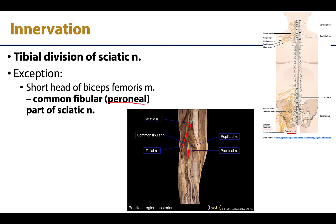In the posterior thigh, the muscular branches come off of the tibial division of the sciatic nerve, so even though you could say it is innervated by the sciatic nerve because it looks like just one bundle, those fibers are truly coming off of the tibial division. The one exception is the short head of the biceps femoris, which is innervated by the other division — the common fibular peroneal. So a specific divisional injury of the sciatic nerve would affect one head of the biceps femoris and not the other.